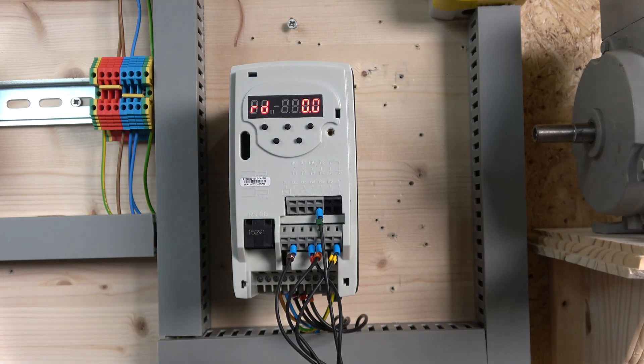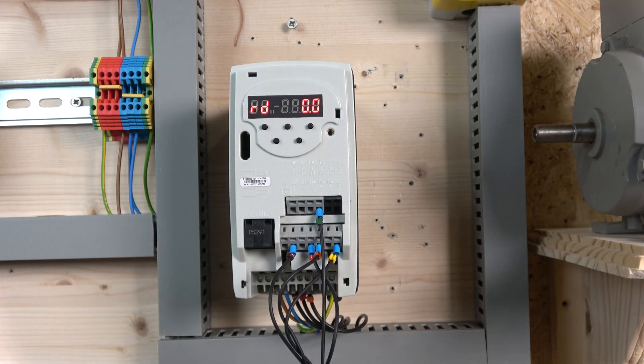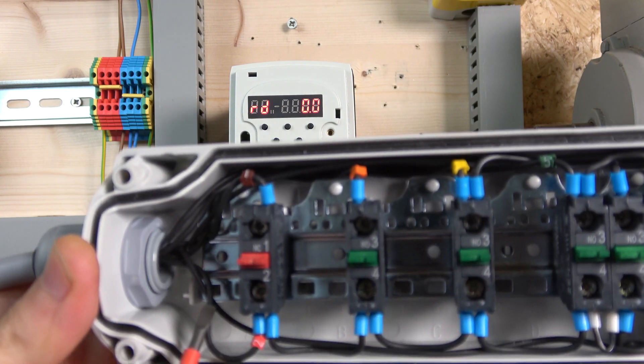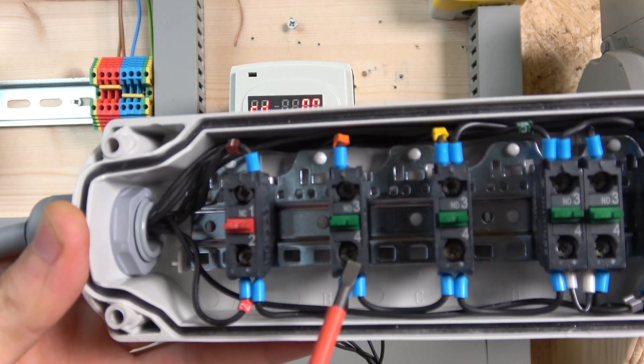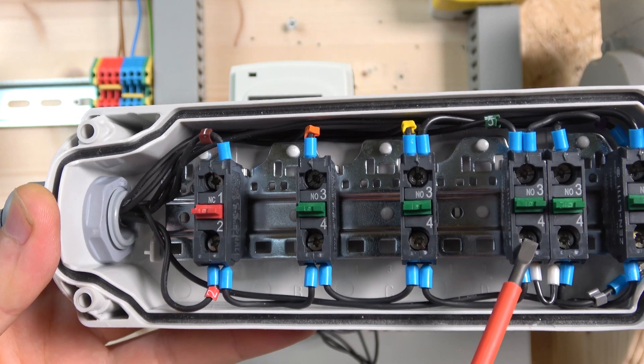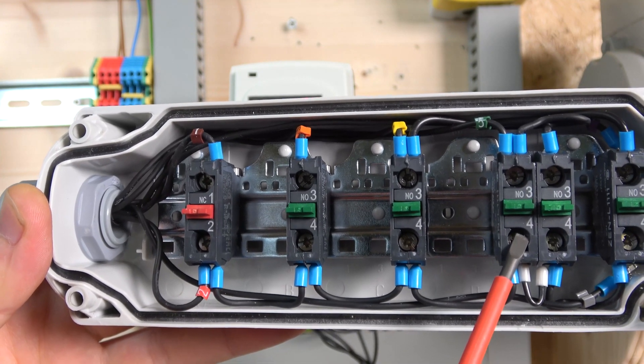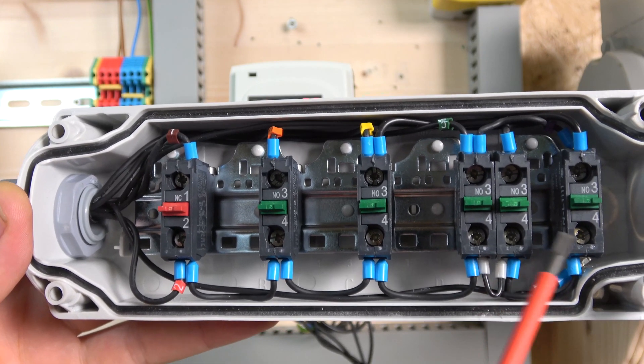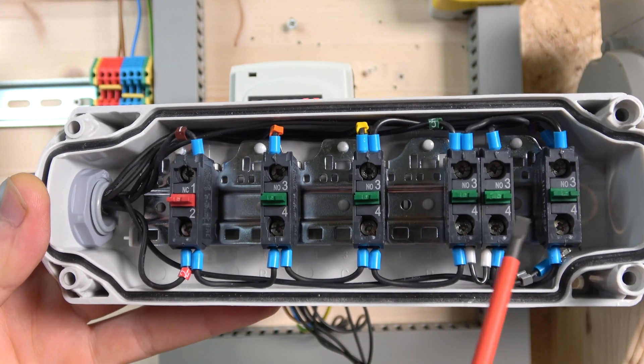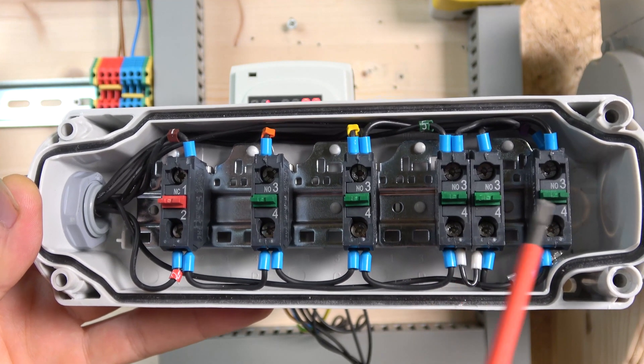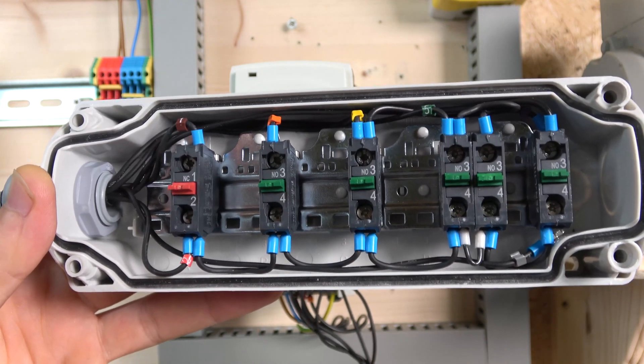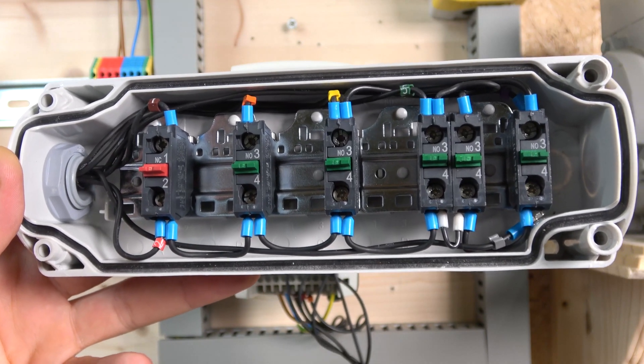For the wiring, we have B2 again, a 24 volt signal coming through and going back to our B4 as our enable signal. Then we have run signal for B5, and then we have speed 1 on B7, and speed 2 is going to be T4. As you can see, I have two signals, so basically to achieve the third, well fourth in our case, you have to close these two together.